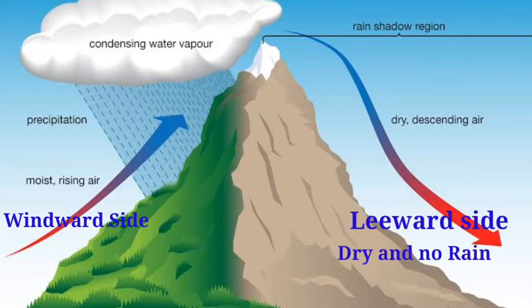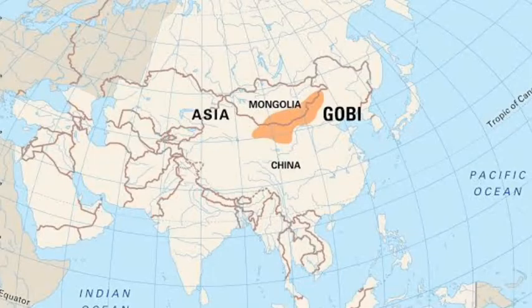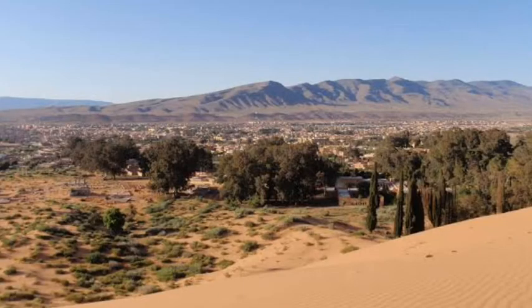The leeward side receives little or no rain, so semi-arid and cold winter deserts are found on the leeward side of mountains, which are known as rain shadow deserts. Examples include the Gobi Desert in Mongolia and the Sahara Desert, which is blocked by the Atlas Mountains, keeping the place dry.